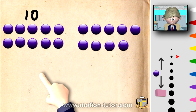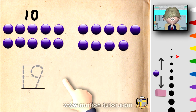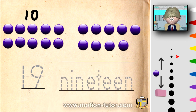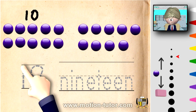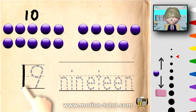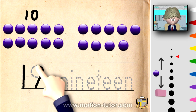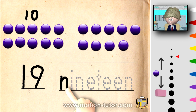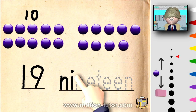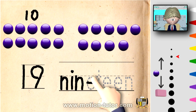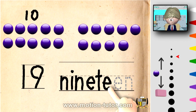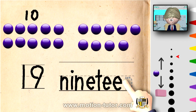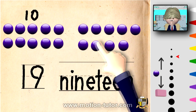Now, 19 looks like this, and this is how you spell it. So let's write the number 19 — it's a 1 and a 9, and you spell it by writing N-I-N-E-T-E-E-N. Ten and 9 more is 19.